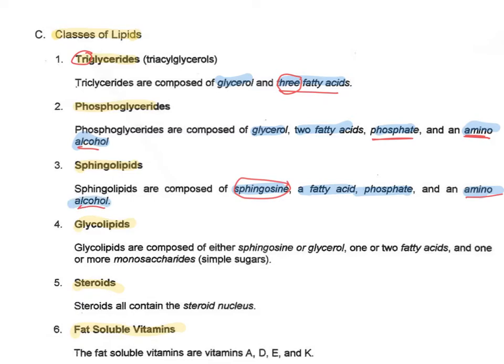Notice that both phosphoglycerides and sphingolipids have amino alcohols in them. Glycolipids are composed of either sphingosine or glycerol, and one or two fatty acids — dependent on which one we're looking at — plus one or more monosaccharides. The key here is that glycolipids have a monosaccharide present. Steroids have a steroid nucleus. All of these classes are grouped together because of their common characteristic: they do not like water and are insoluble in water.